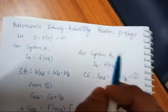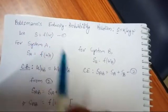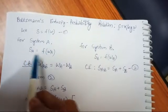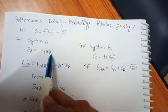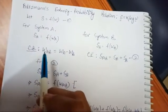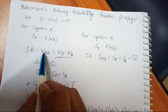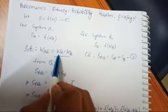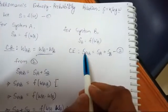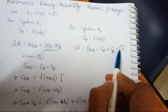Let us consider two systems: System A and System B. Since S is a function of probability, for System A, S_A equals F of W_A, and for System B, S_B equals F of W_B. Now, the combined probability is always in the form of multiplication: W_A dot W_B. And combined entropy is always in the form of addition.